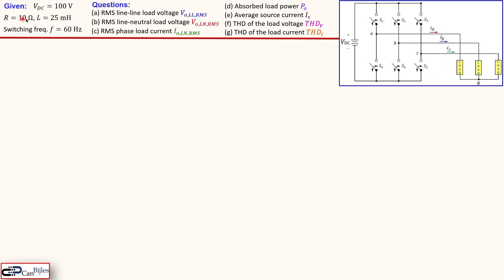The VDC is 100 volts. We have R of 10 ohms and an inductor of 25 millihenry as the load — a series RL combination, the same for all three phases. The questions are: we would like to calculate the RMS line-to-line voltage, RMS line-to-neutral voltage, RMS phase load voltage, absorbed load power, average source current, THD of the load voltage, and THD of the load current.